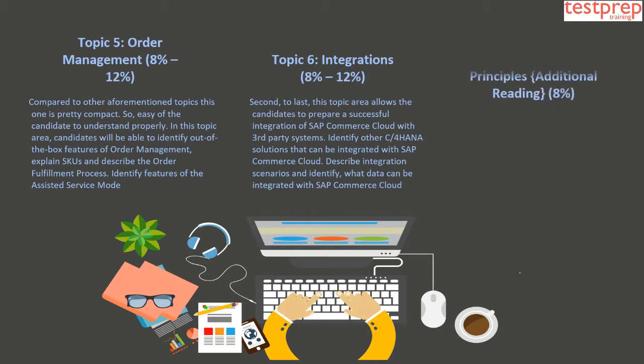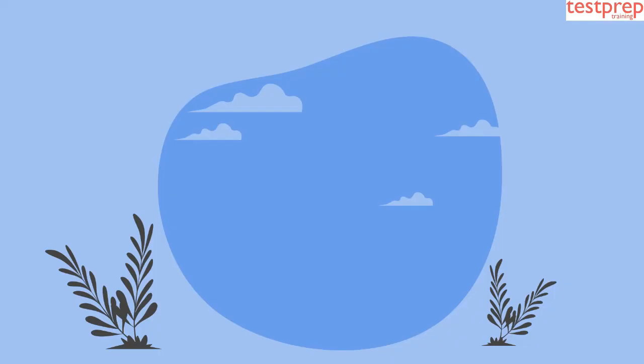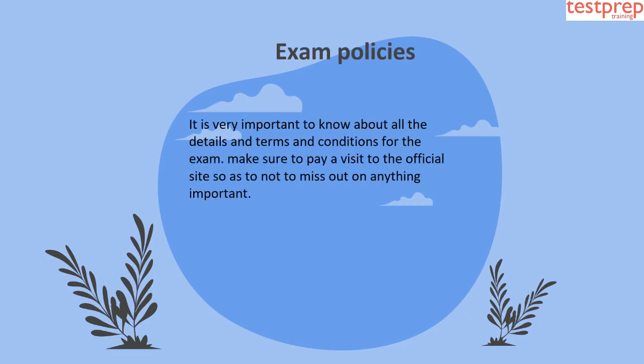Topic 7: Business Analyst Principles — Additional Reading, which comprises 8% weightage in the exam. This last topic is additional reading where you'll be able to identify key elements of the project delivery framework as well as tasks and responsibilities of the business analyst role in a project's life cycle.